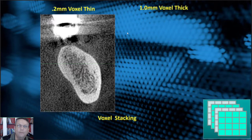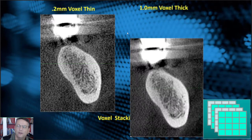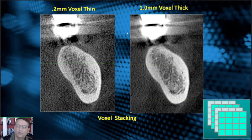Here's a 0.2 millimeter voxel thin slice. If we stack the slices, we want to be able to see the canal and the edge of the bones. All I've done between the 0.2 millimeter voxel and the one millimeter voxel is stack the slices. See how you can see the nerve canal very cleanly now — the other one looks a little noisy. So these are just a few hints to help improve your software settings.